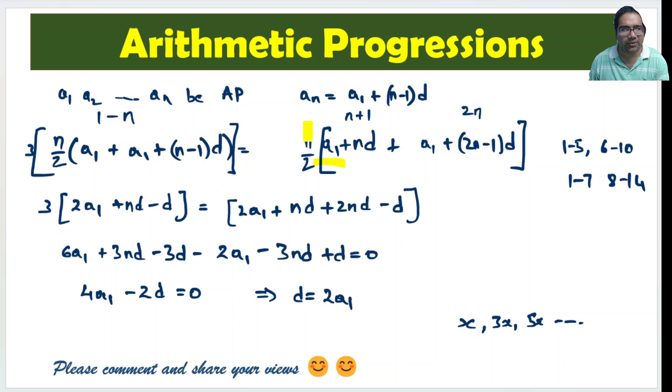So, let us cancel this n by 2 and this n by 2 and simplify this. If n by 2 goes, a1 plus a1 is 2a1 plus nd minus d. Here, a1 plus a1 is 2a1 plus nd plus 2nd minus d. 3 times of this is equal to this.